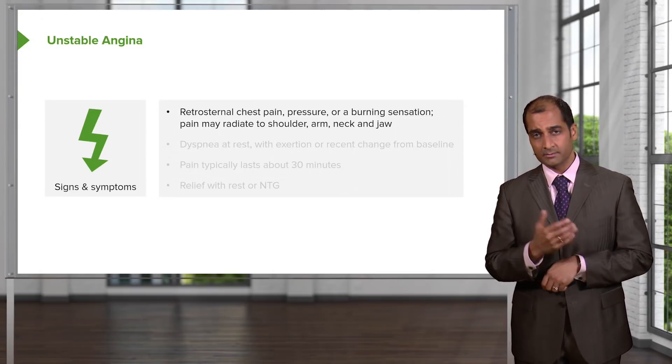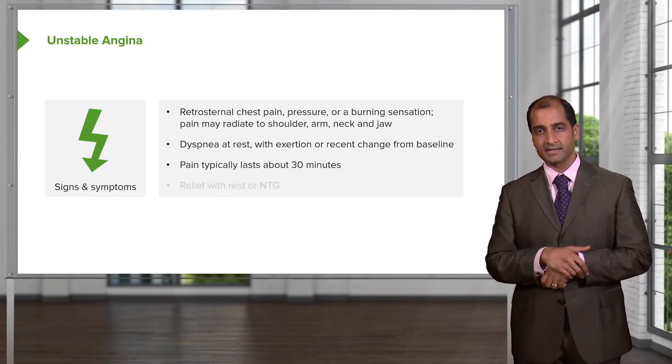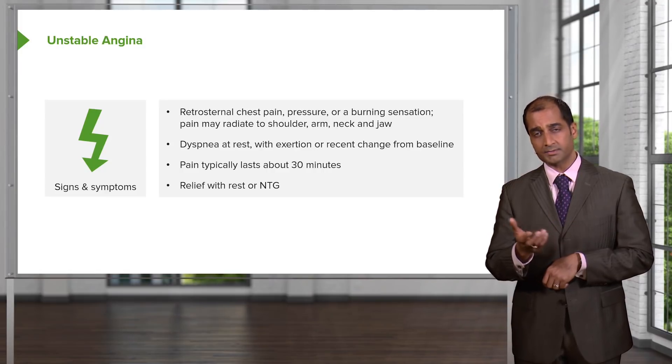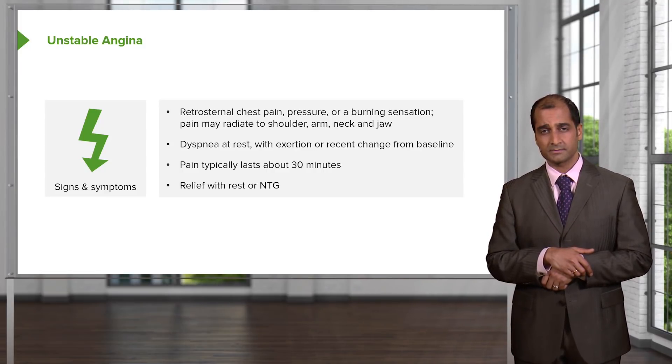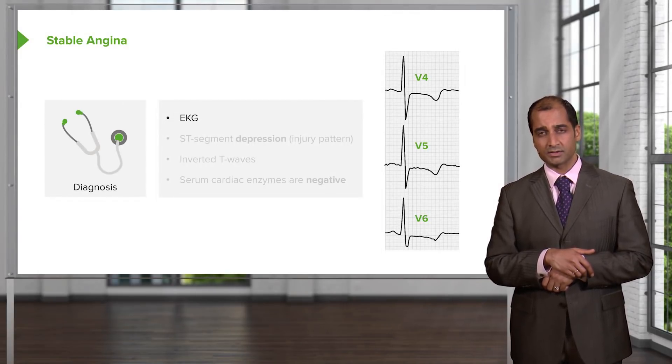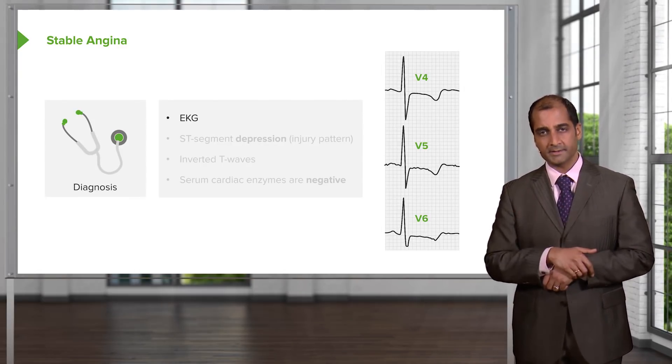Unstable angina. Once again, the pain exactly as you expect. Distinct rest pain, usually lasts about 30 minutes. Relief with rest or nitroglycerin depends on the occlusion. Hopefully that will take care of it. But remember, you want to become more and more aggressive, especially as you get into unstable angina. You start thinking about, what do I need to do to bust that clot?